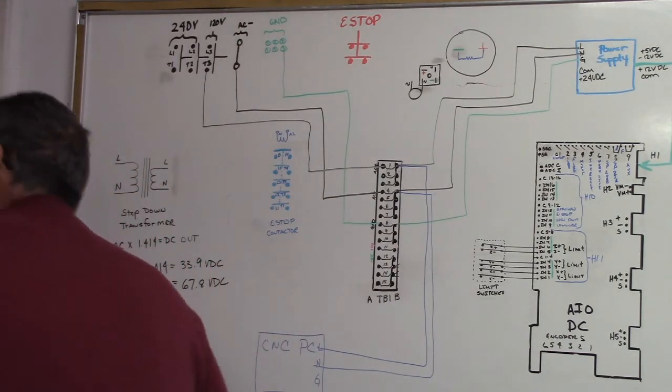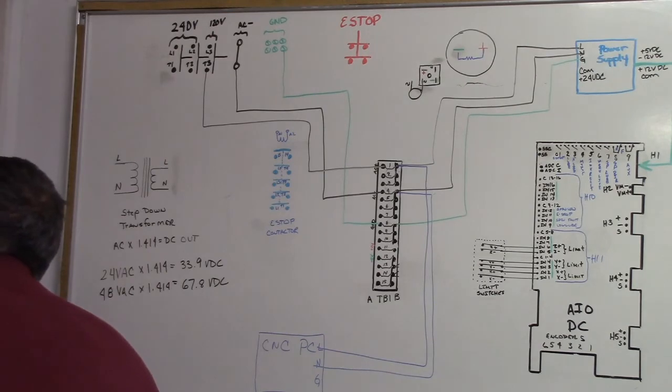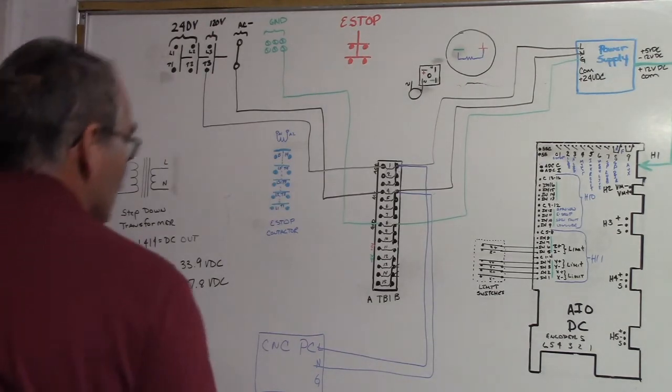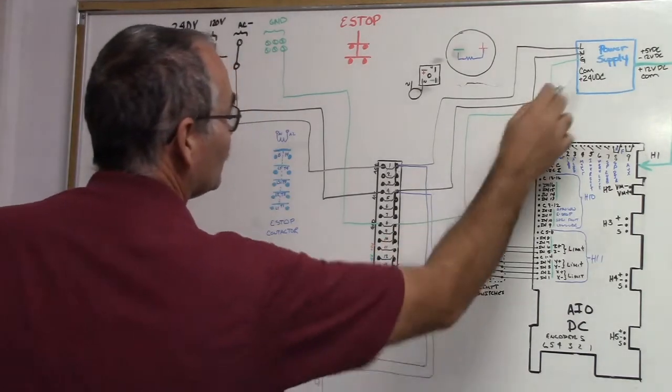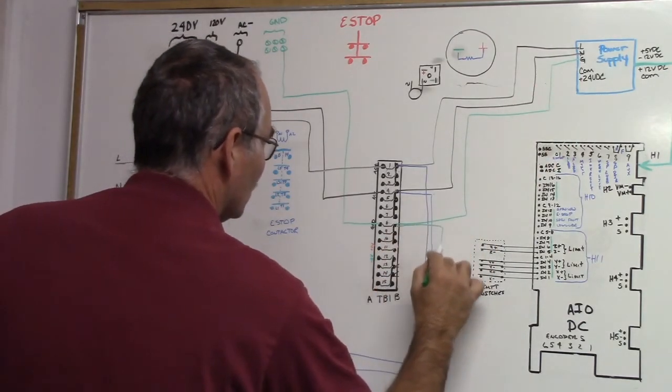And then our ground is going to TB1-8B. So it kind of parallels the power supply to the all-in-1 DC. You see that?